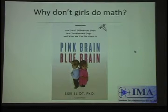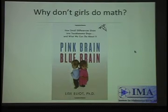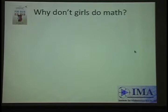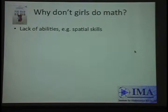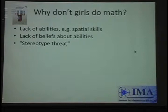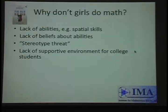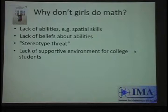One paper I consulted suggested several reasons why girls might not do math. The worst is "they can't" — don't believe it. But maybe they don't think they can, even though they can. There's something called stereotype threat that seems to impact girls in math. Is there a lack of supportive environment for college students or faculty? Is there some implicit bias we don't even notice because it's hidden? There's a wonderful website at Harvard where you can test your implicit bias on various subjects.